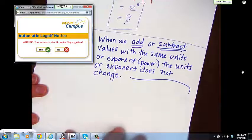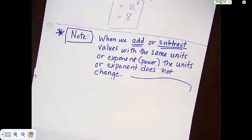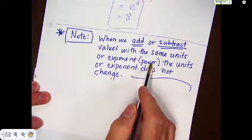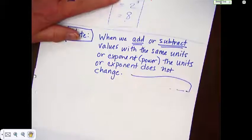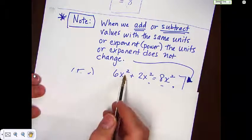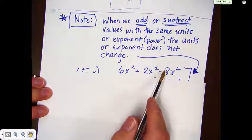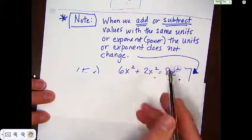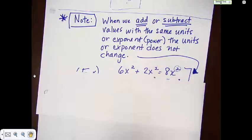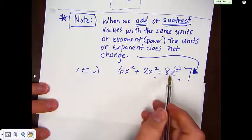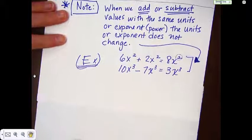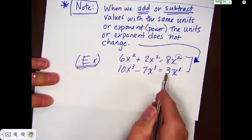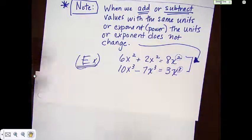Special note: when we add or subtract values with the same units or exponential power, the units or exponents do not change. For instance, 6x squared plus 2x squared equals 8x squared — the square doesn't change when adding or subtracting. It's the same as bananas plus bananas. Similarly, 10x cubed minus 7x cubed equals 3x cubed. It stays the same because we're adding or subtracting.